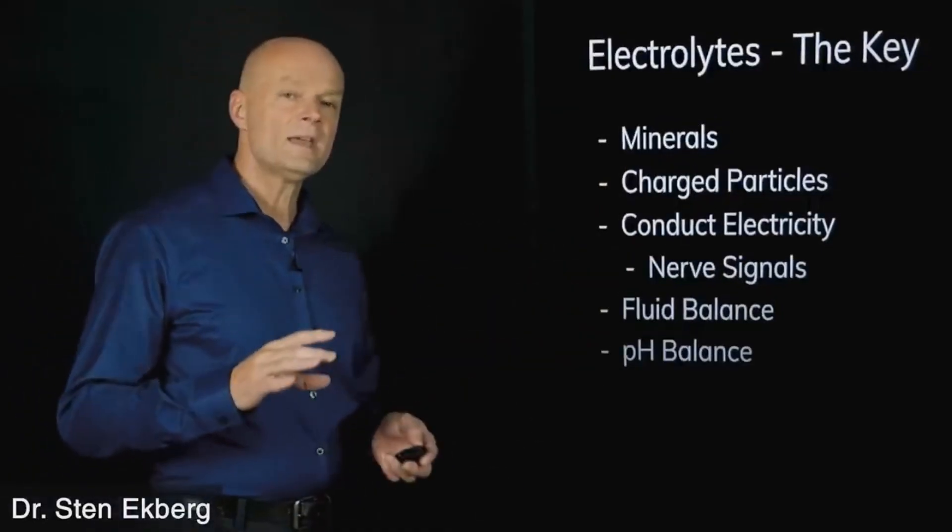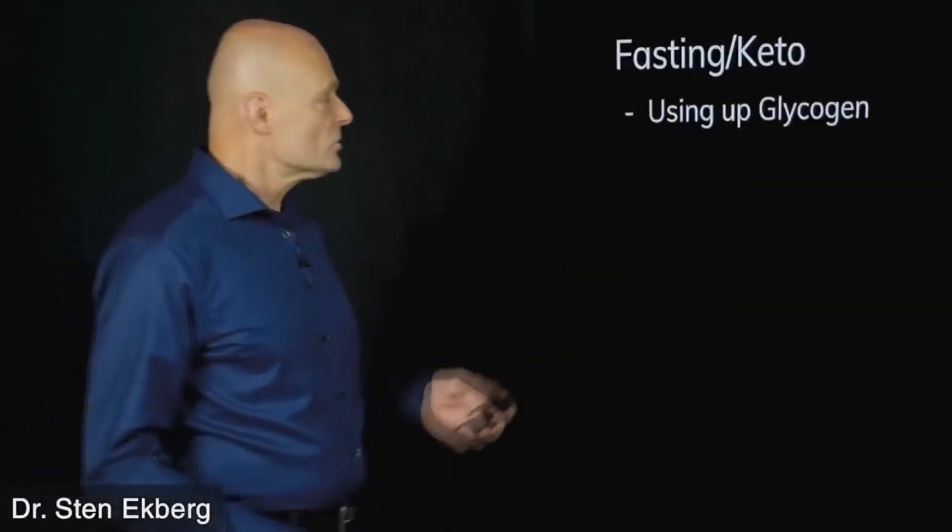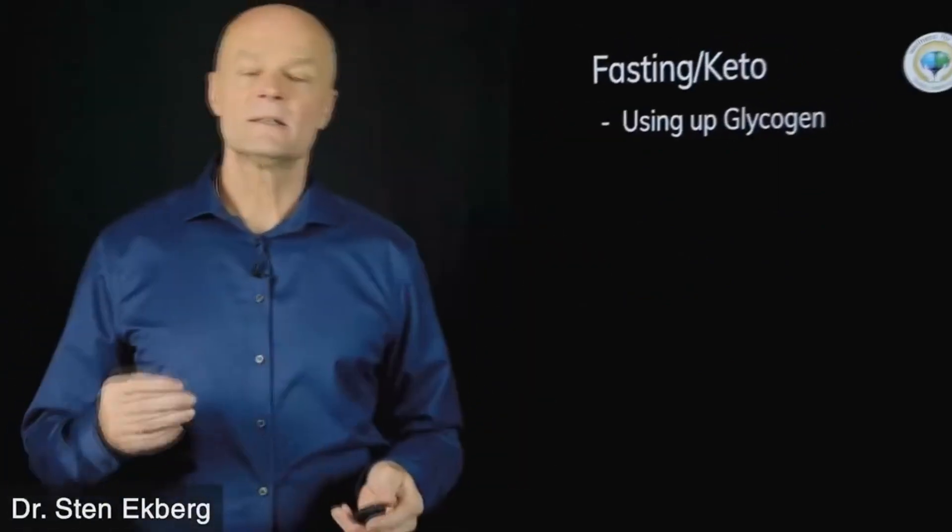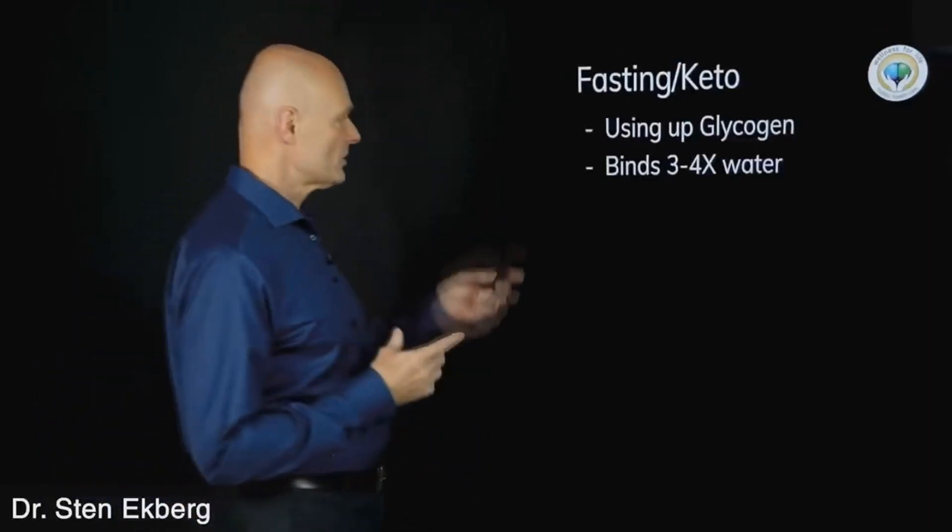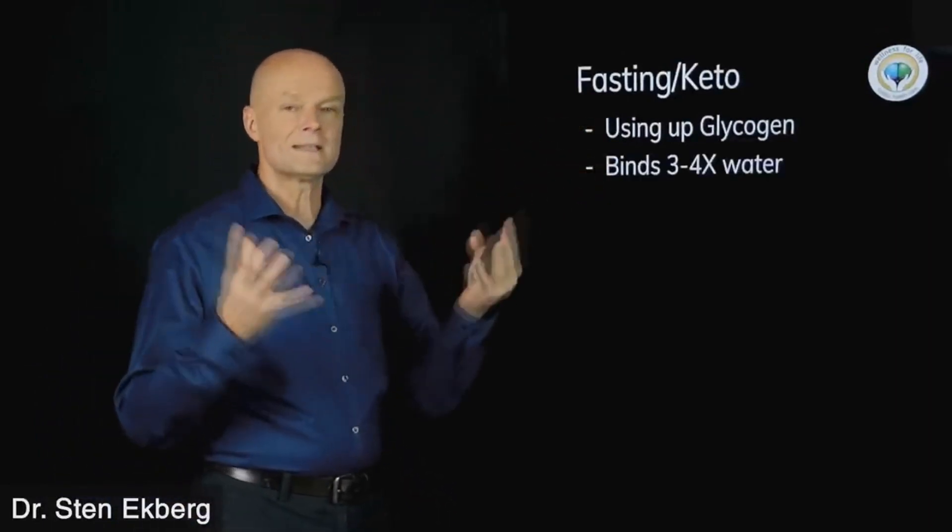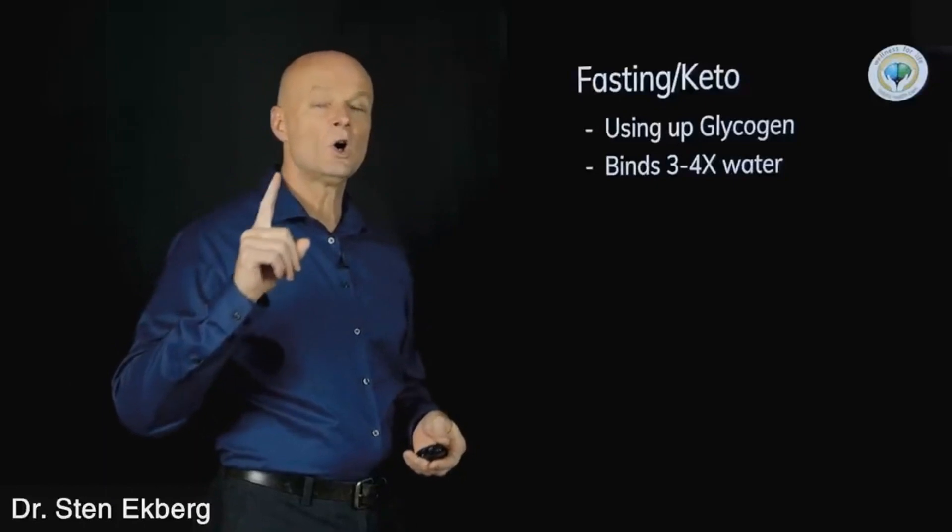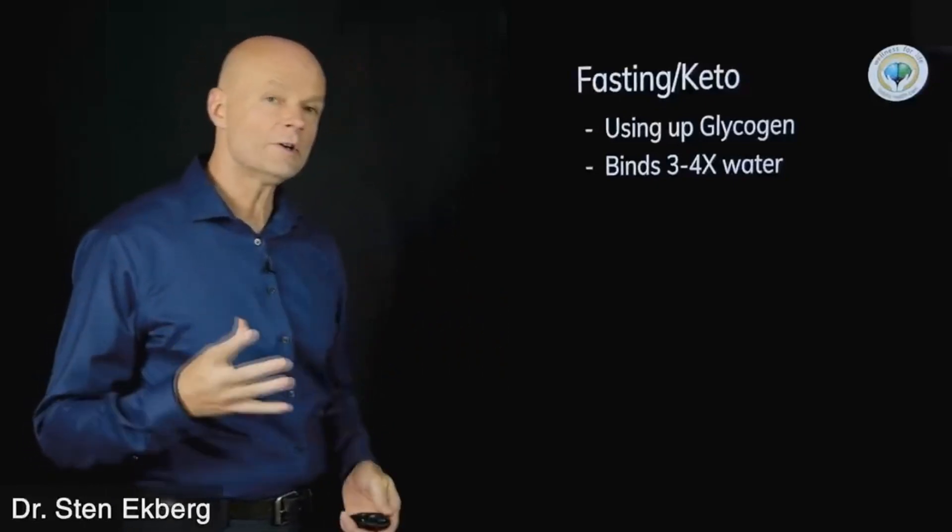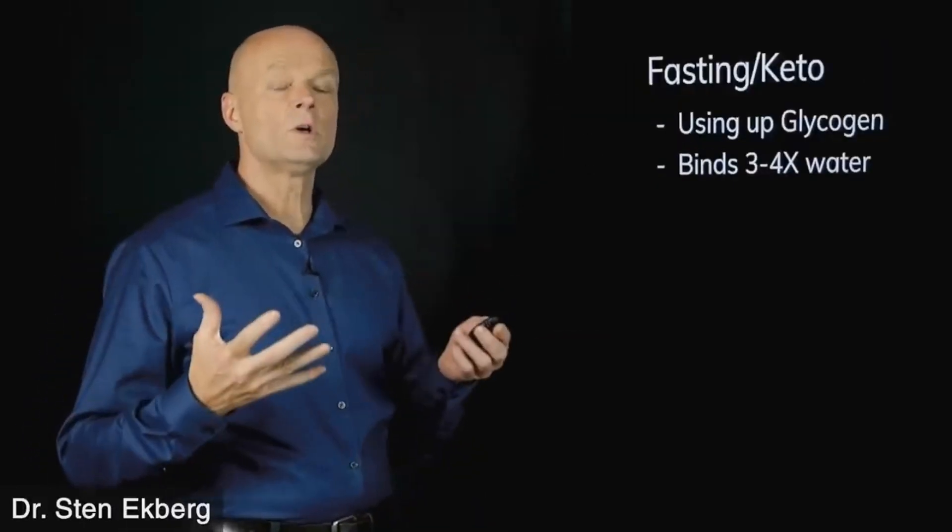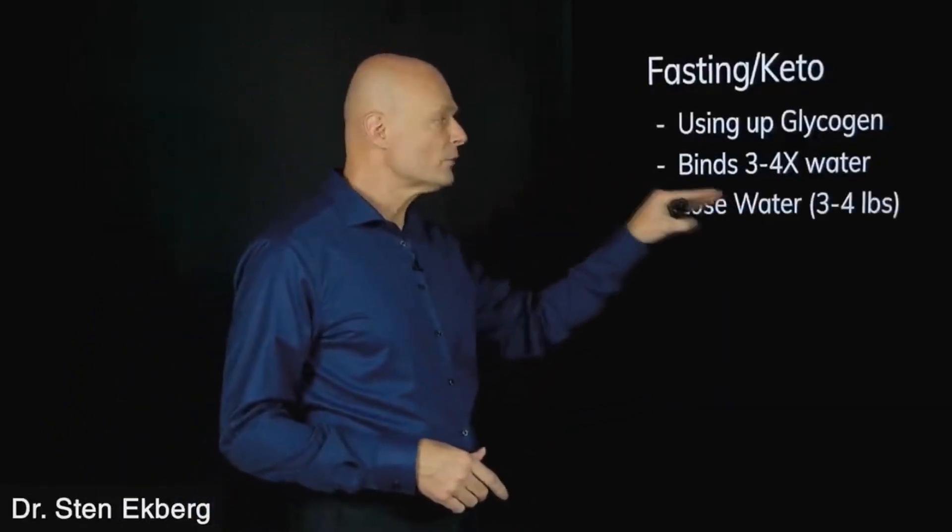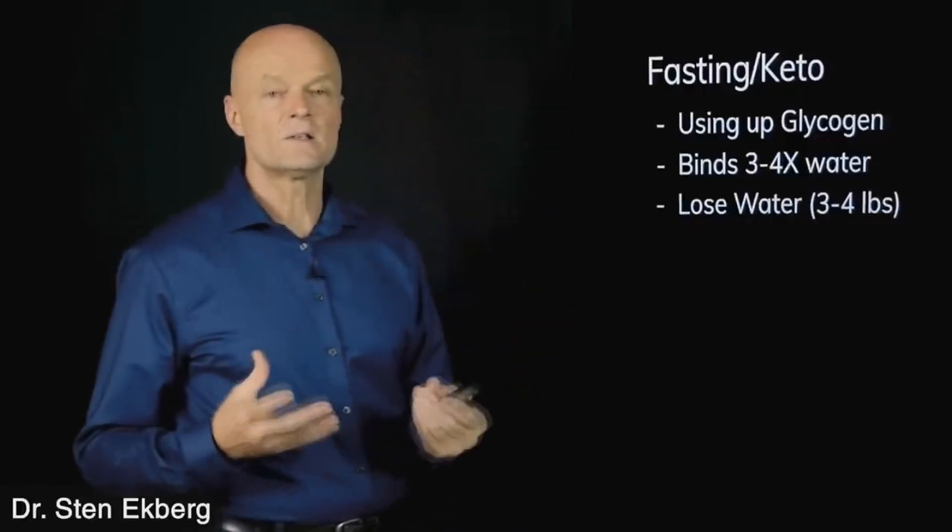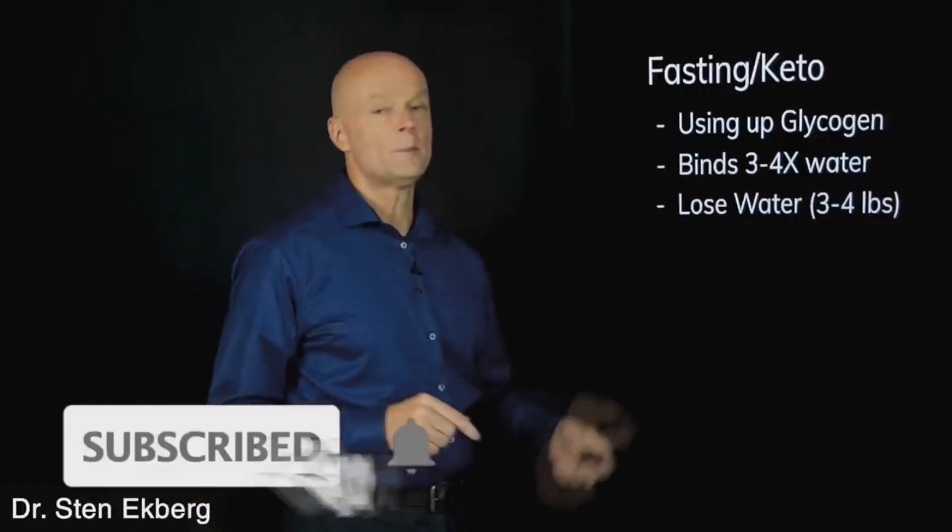Here's why these factors can change when you start fasting and keto. When you eat less, especially when you eat less carbohydrates, you start using up the stored carbohydrate you have called glycogen. Glycogen also binds with water, it's like a sponge. One gram of glycogen holds on to about three to four grams of water. When you burn up the glycogen, there's nothing to hold the water, so it becomes extra and you start losing that water. The first three to four pounds of any diet is going to be water loss from using up glycogen.